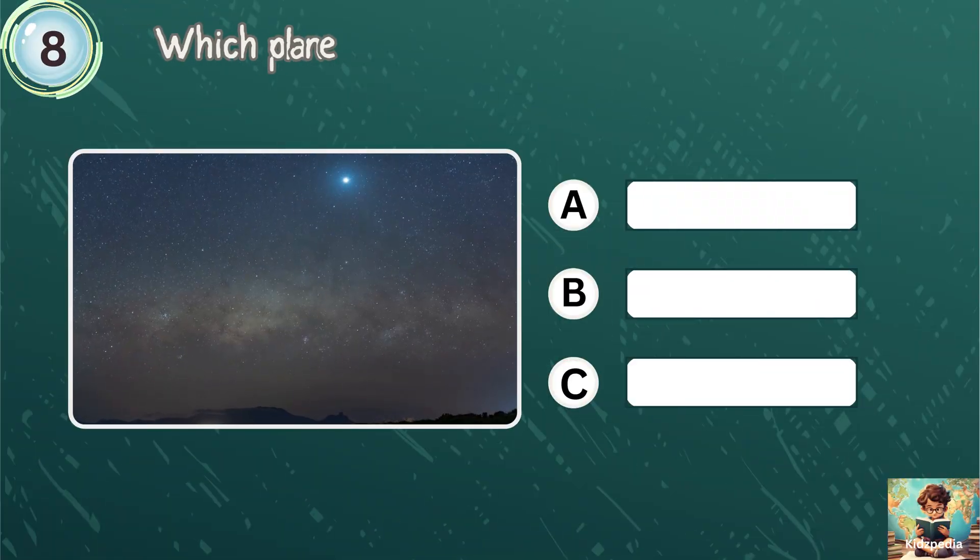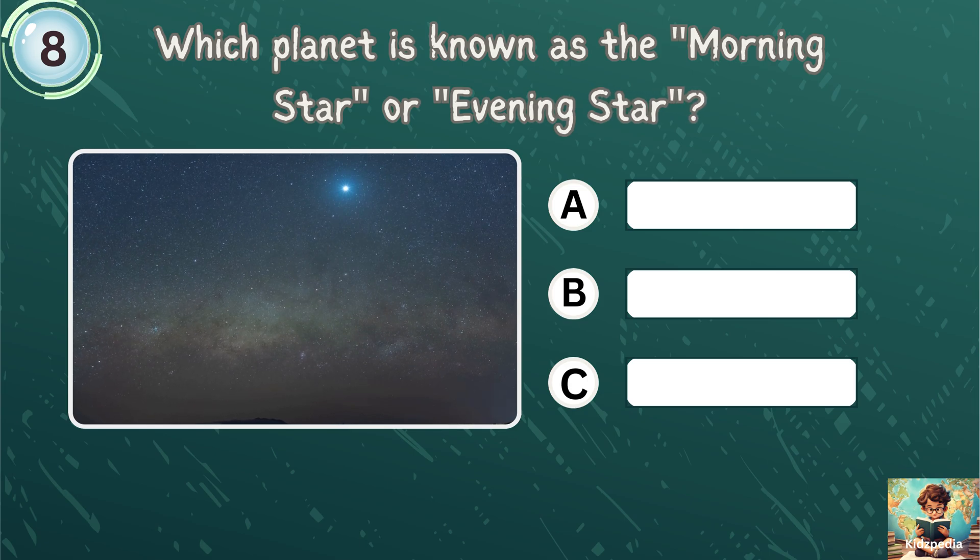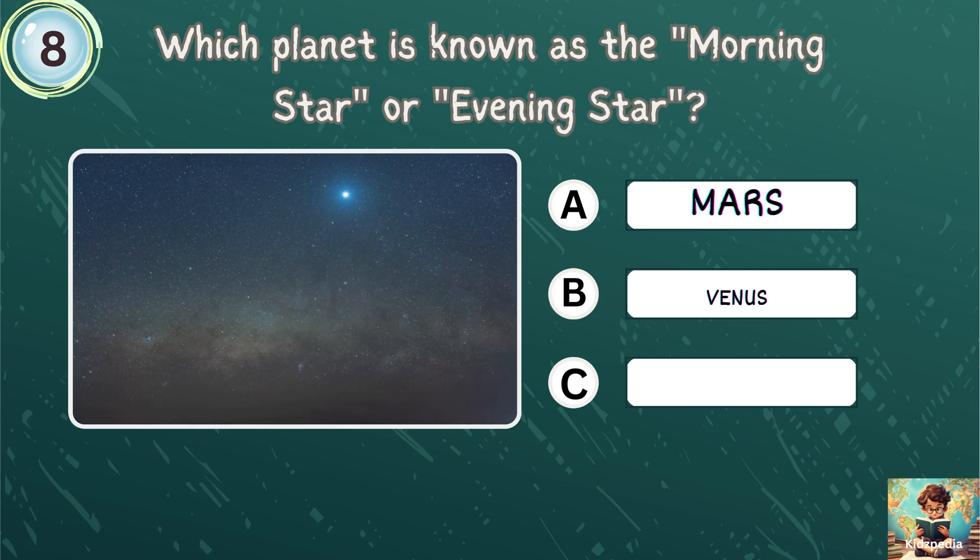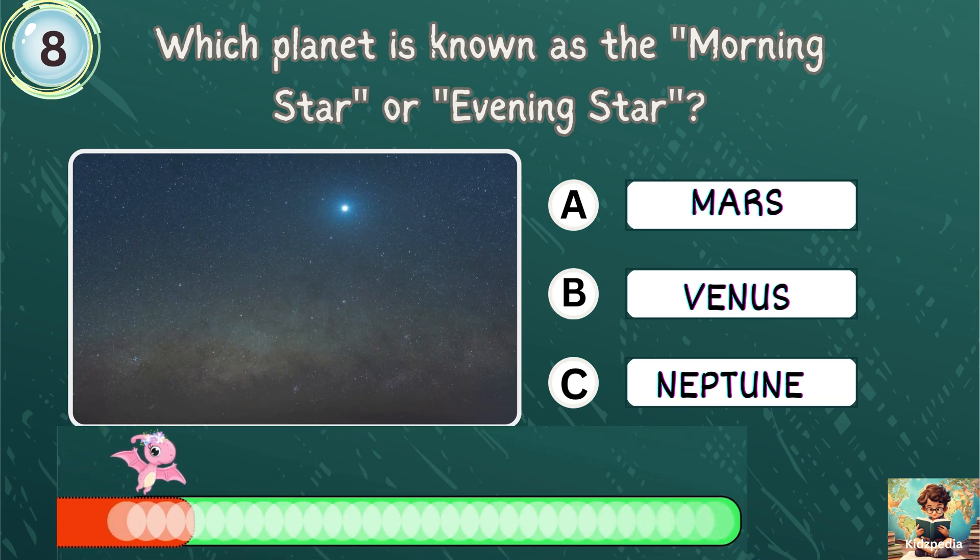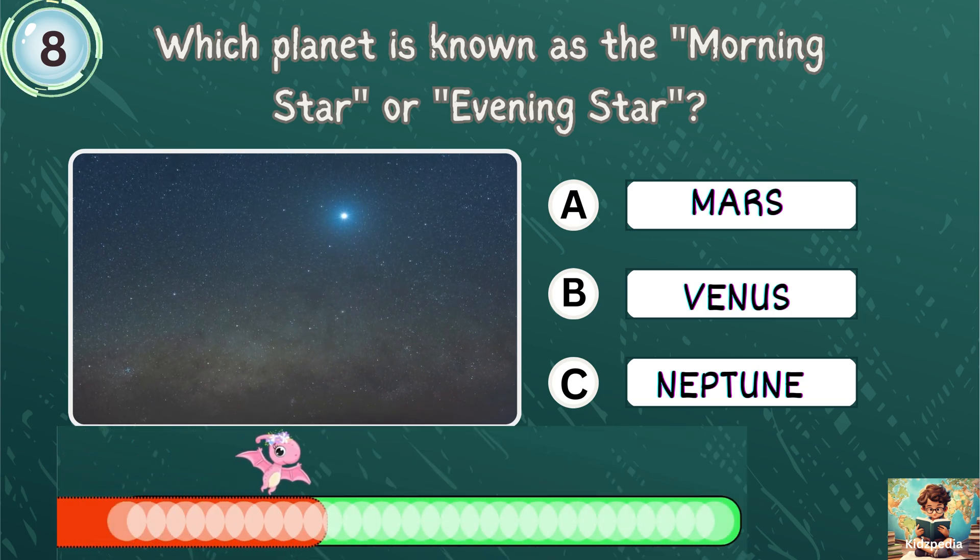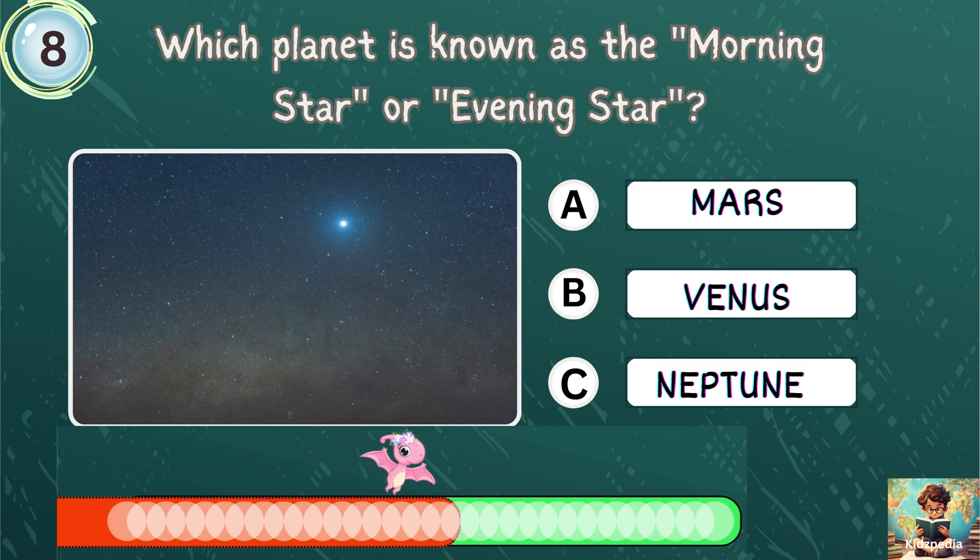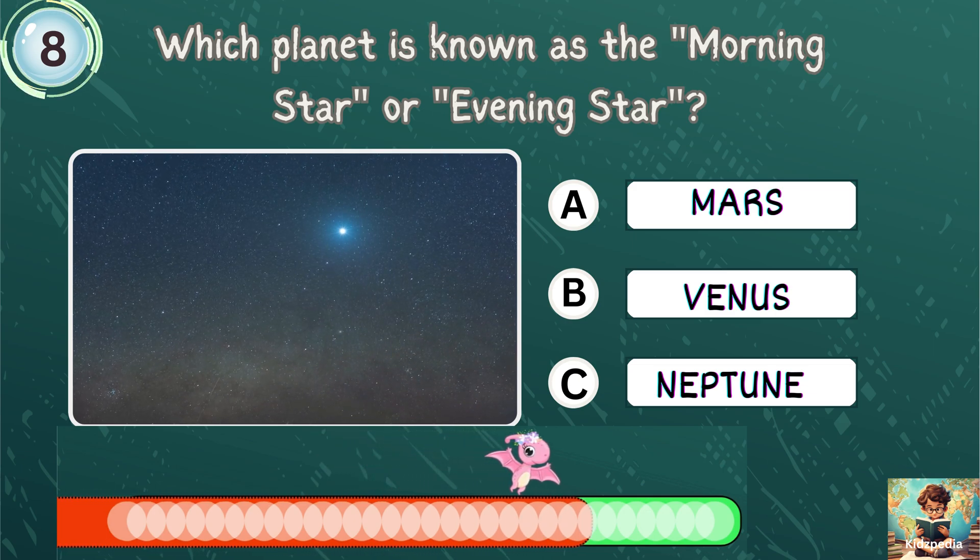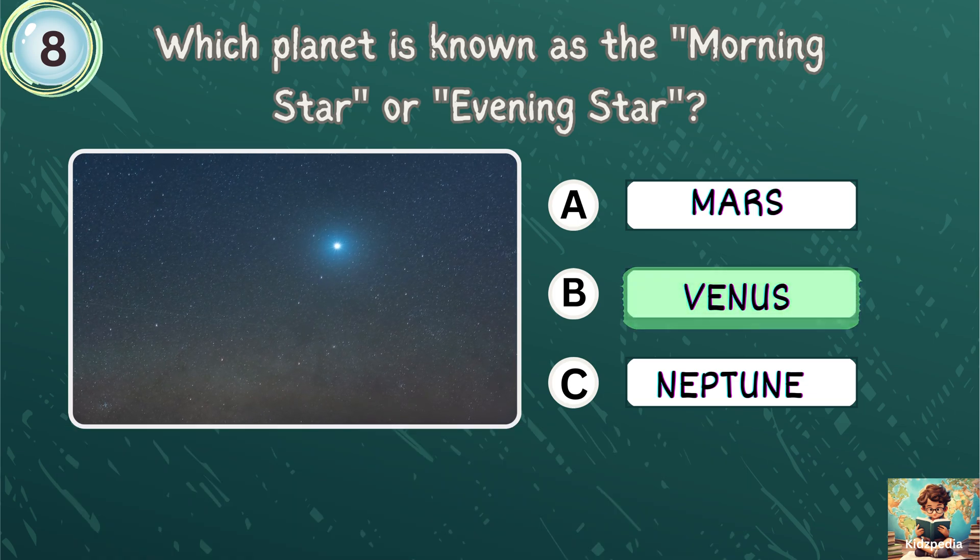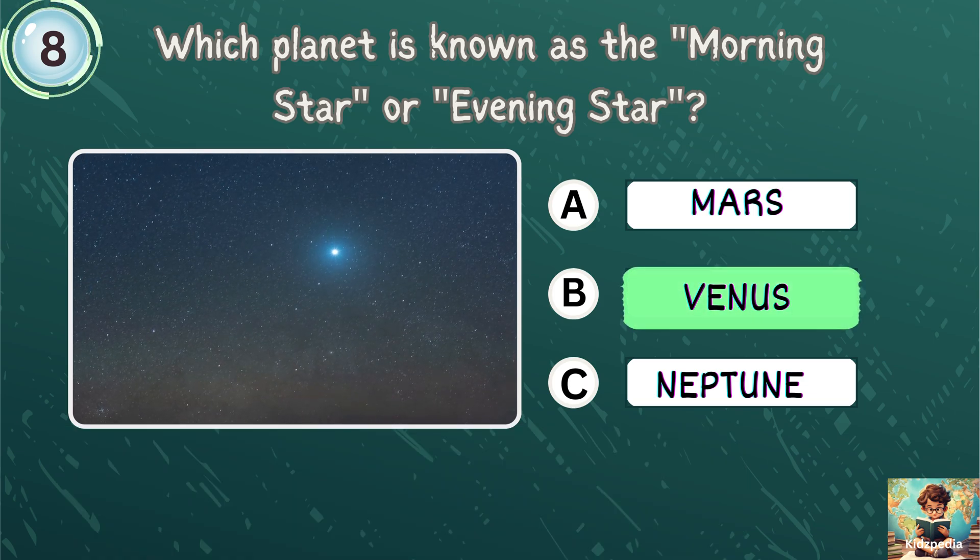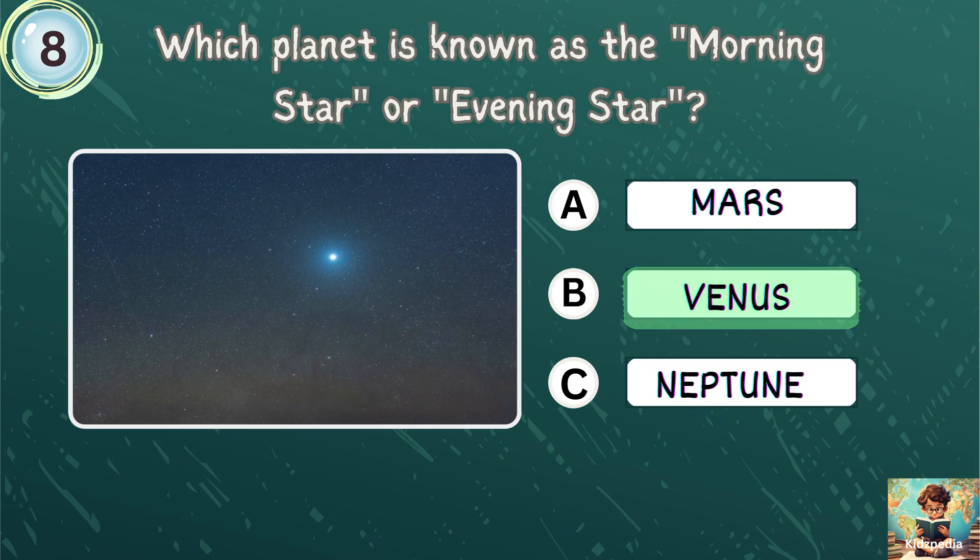Which planet is known as the morning star or evening star? Mars, Venus. Yes. Venus is the correct answer. Venus is known as the morning star or evening star.